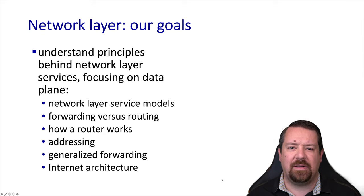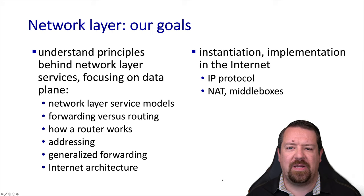The network layer service model includes forwarding and routing packets to get them to the destination, as well as the assignment of internet addresses. Understanding the network layer is also tightly coupled to understanding internet architecture as a whole. As far as implementation specifics, we will cover both IPv4 and IPv6, as well as middle boxes that provide services beyond those supplied by the native IP protocols.